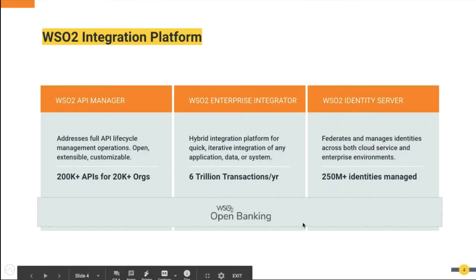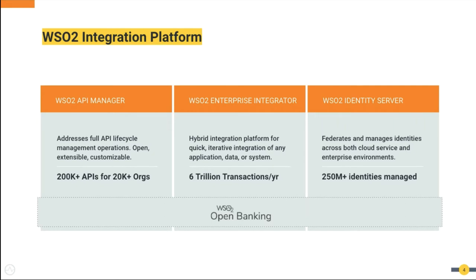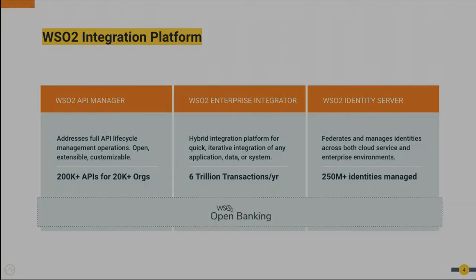A little bit of introduction about WS02. If this is the first time you're attending a webinar, we have three products in our platform: WS02 API Manager, WS02 Enterprise Integrator, and WS02 Identity Server, which will be our focus today. It's a highly extensible, developer-friendly identity solution, and at this point our largest customer handles over 106 million identities. It's a scalable, flexible product that can do a lot for your organization, especially if you have digital transformation projects to improve your users' experience.